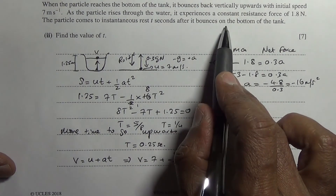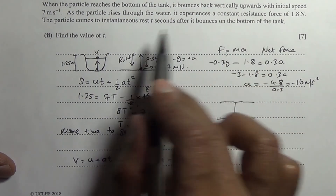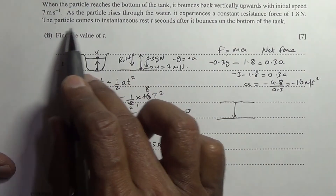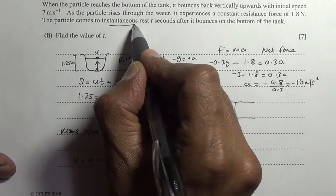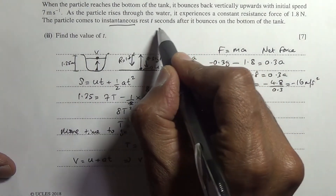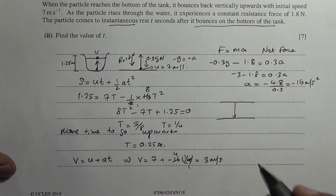The particle then bounces on the bottom of the tank and comes to instantaneous rest t seconds after it bounces. So the final velocity v = 0, and the initial speed u for the downward phase is 3 meters per second.